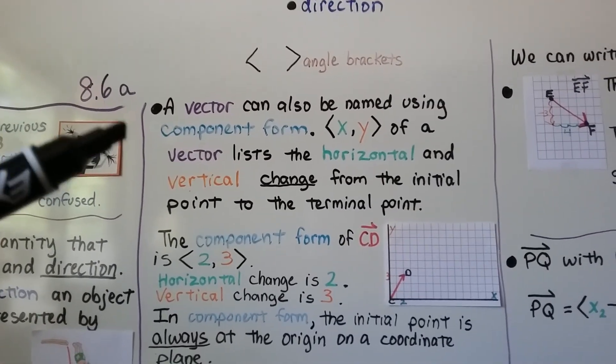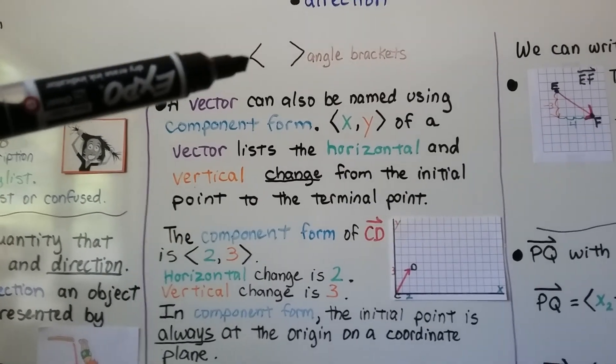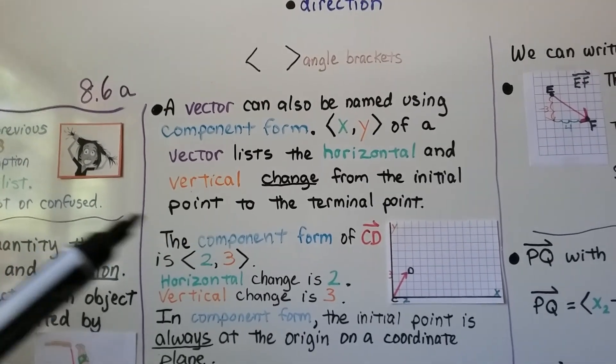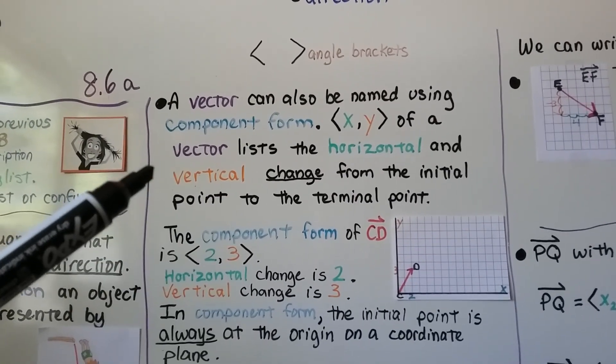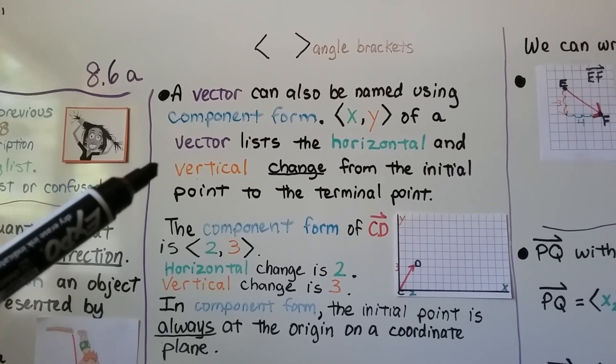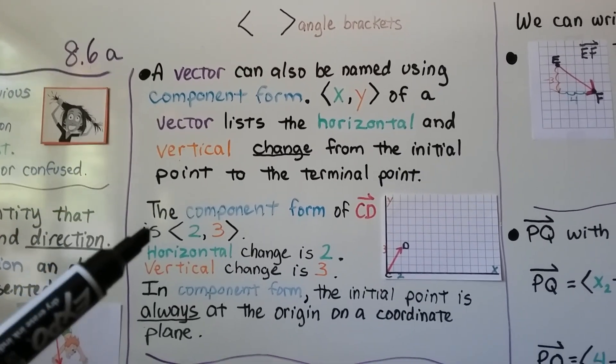A vector can also be named using component form. So these are angle brackets.